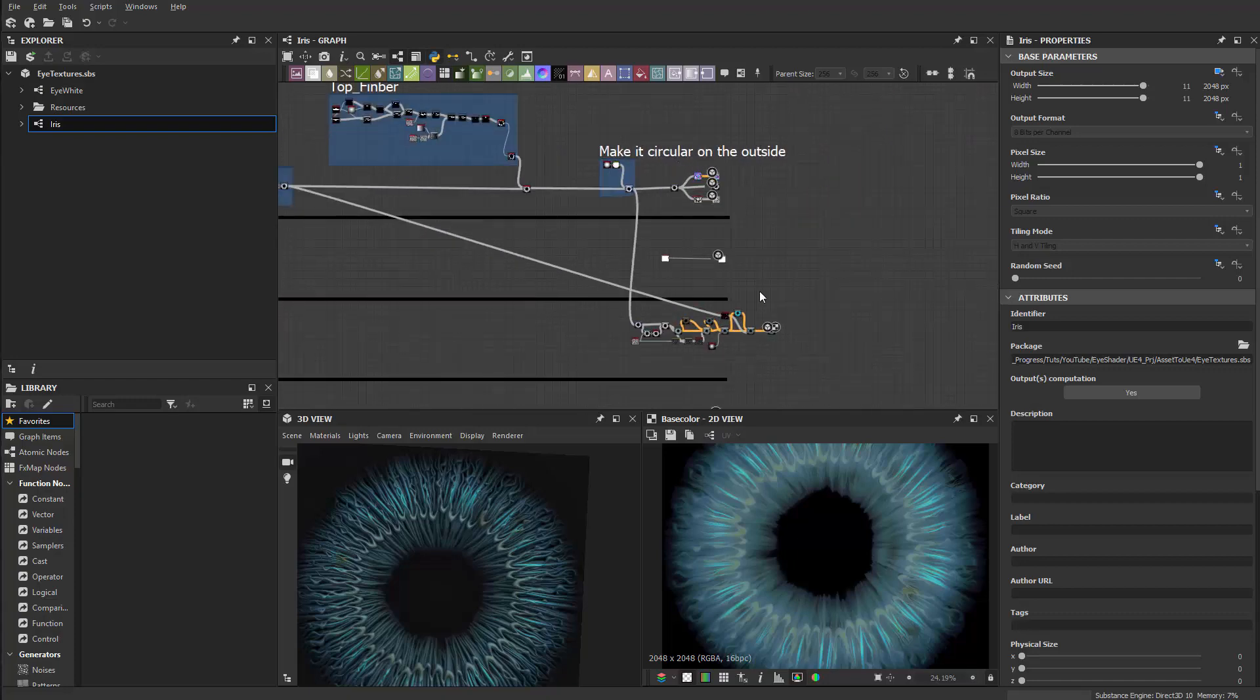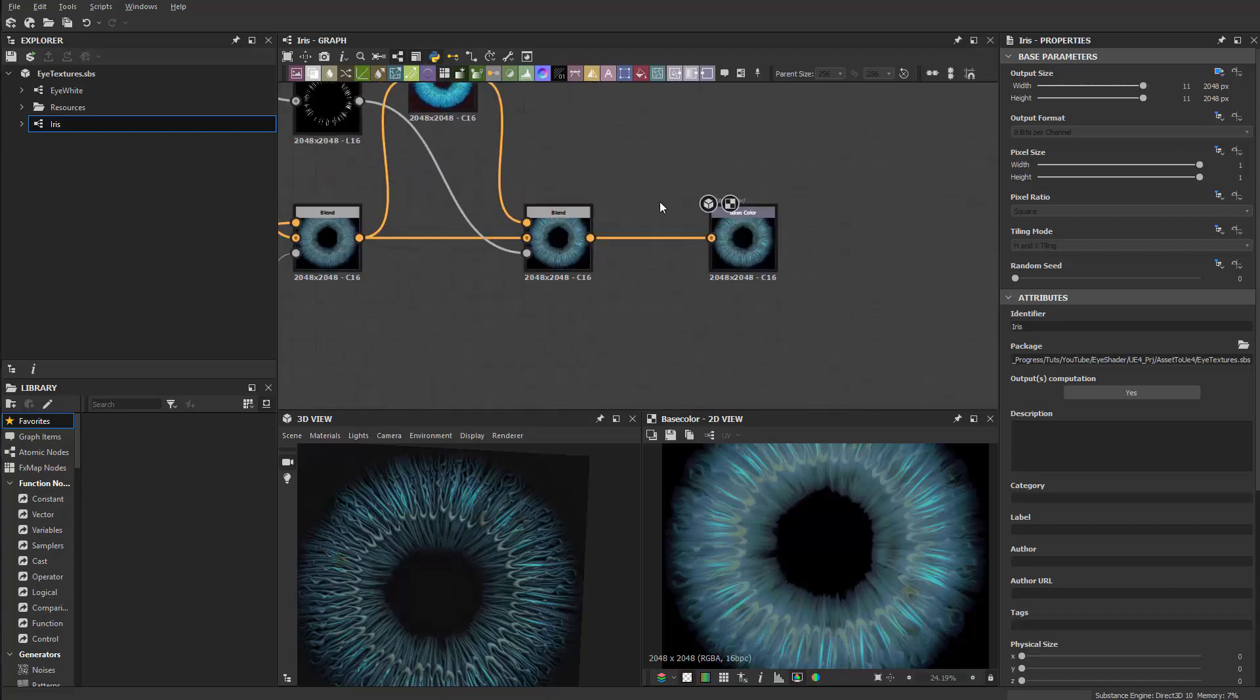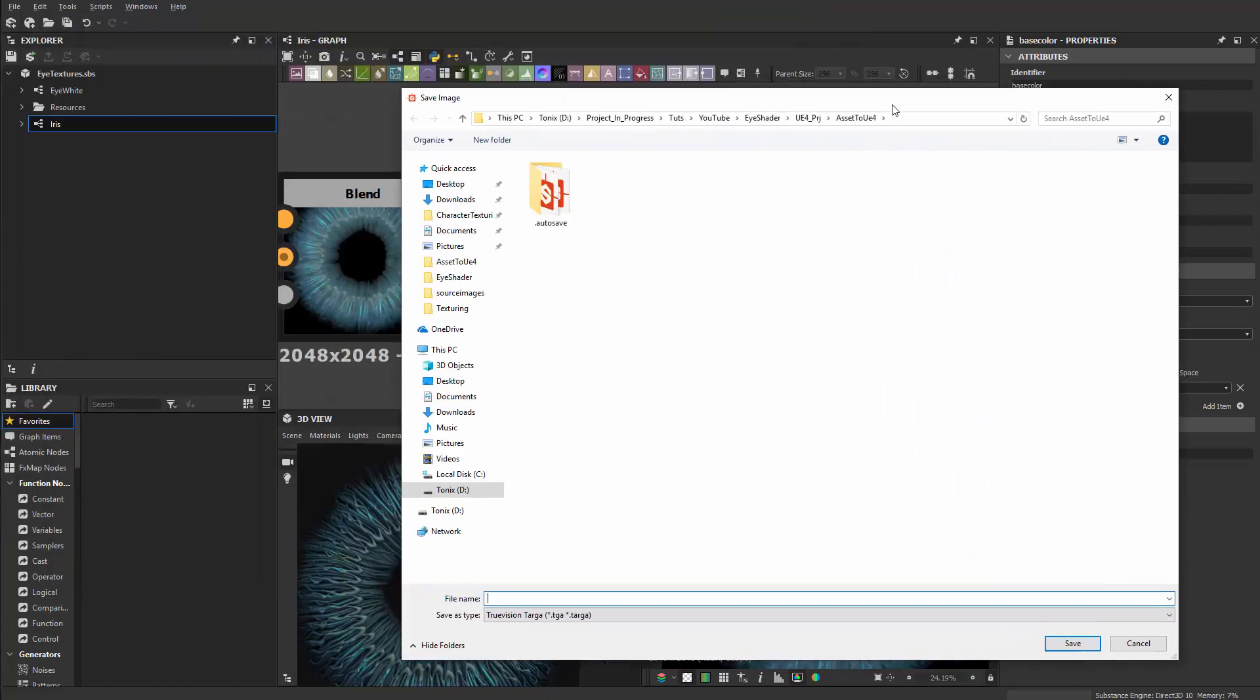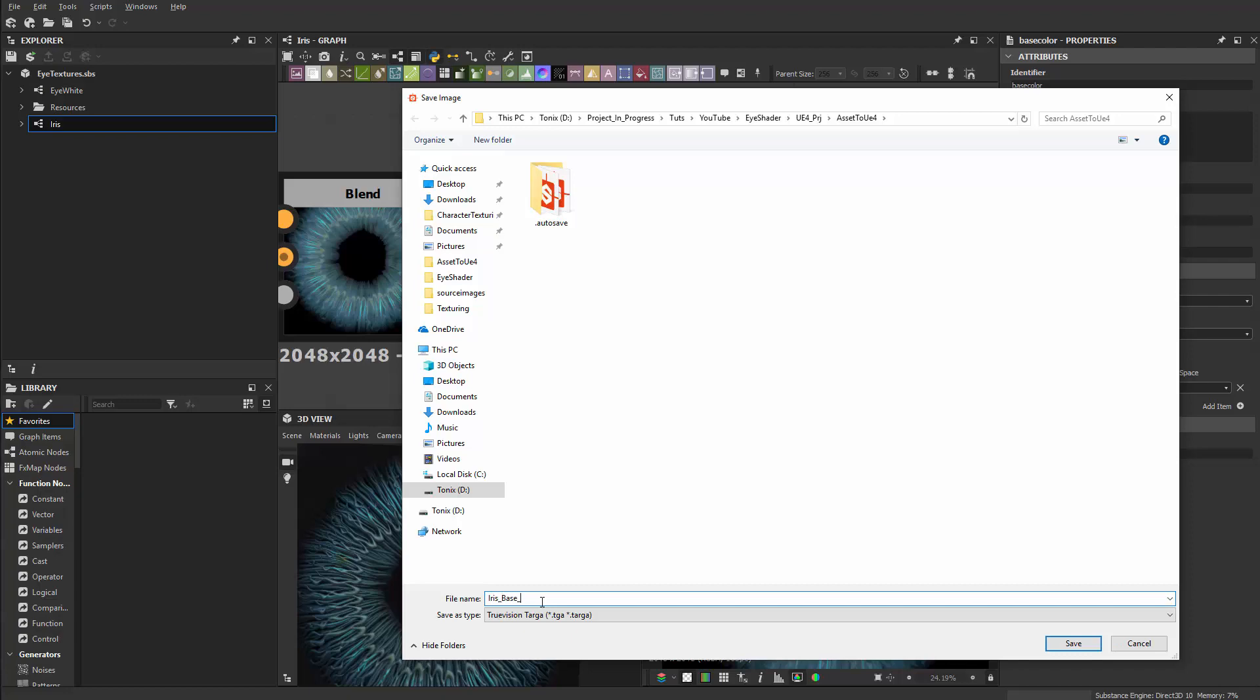Alright guys, welcome back. Let's get our texture exported. I'm going to grab the base color here and save this. I'll call this one iris base color and save it.